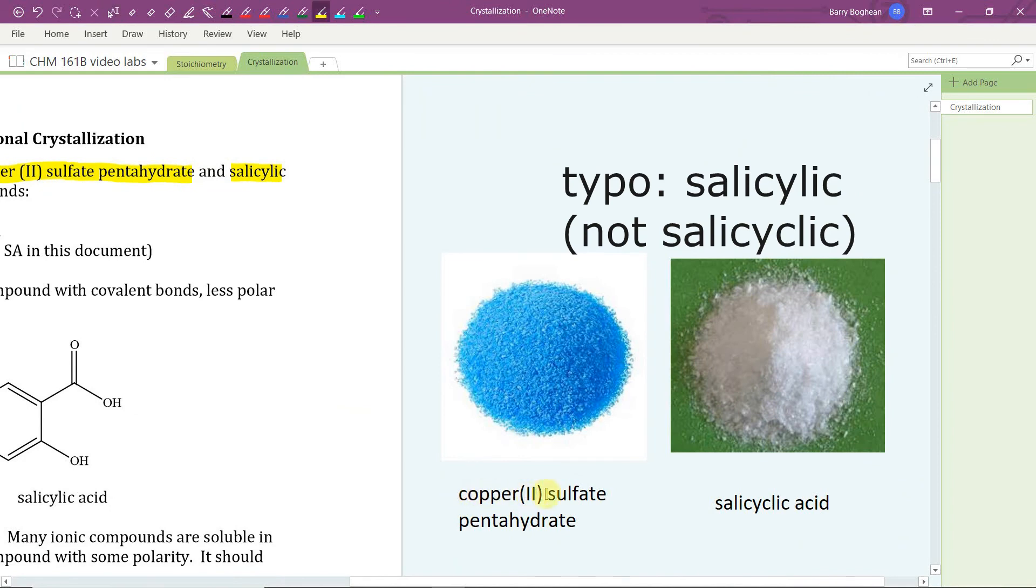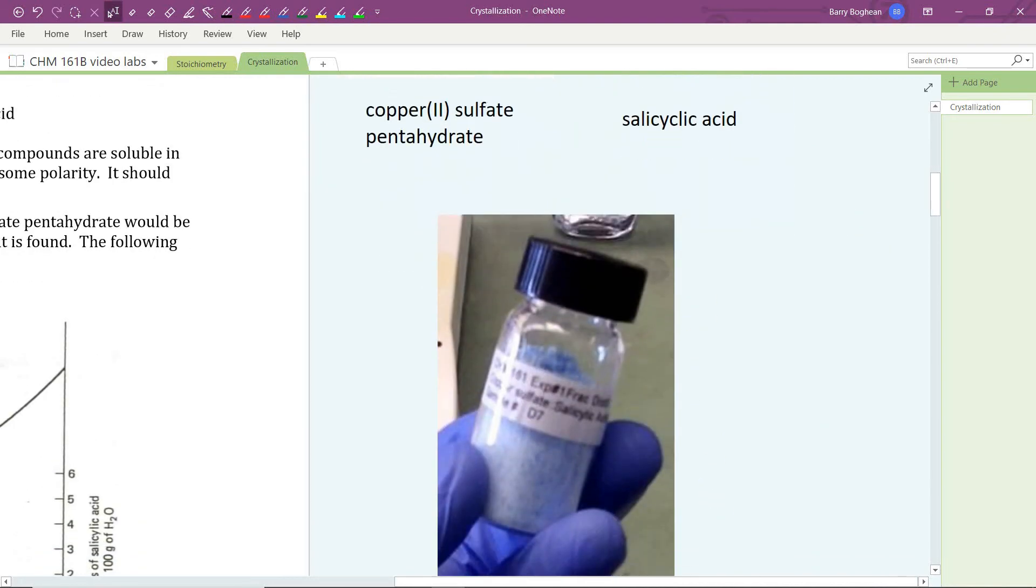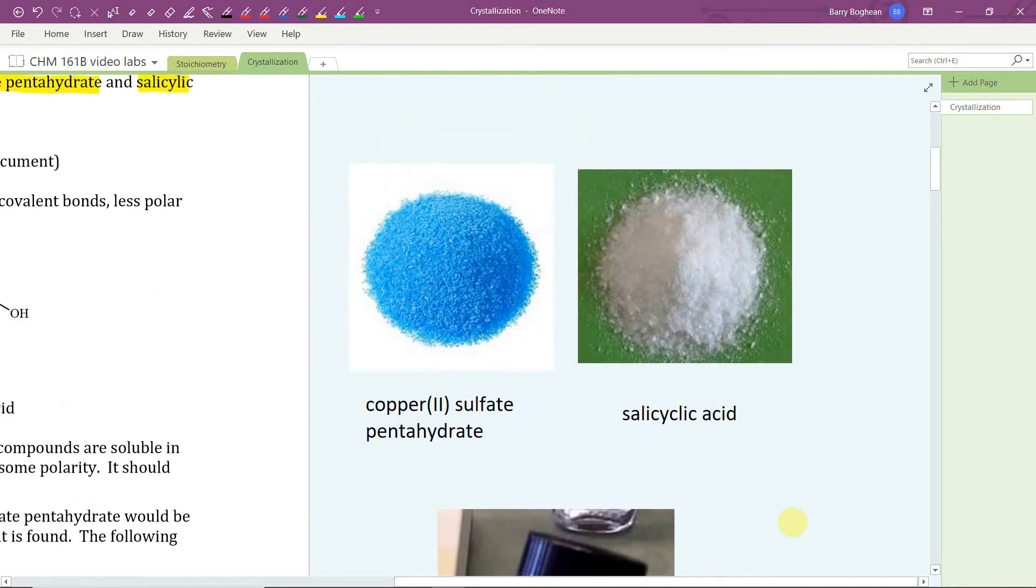Let's take a look at those two compounds to start with. Copper(II) sulfate pentahydrate is a blue crystalline salt and salicylic acid is a white solid organic compound. We will start with a mixture of the two, separate this mixture, and determine the percent composition of it.